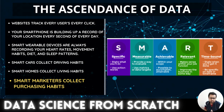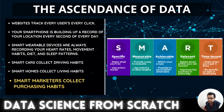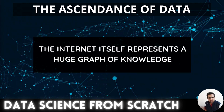Smart marketers collect purchasing habits. Every company or entrepreneur is busy marketing their products and services. Smart marketers gather data on what you like, what you purchase monthly or yearly, and what you are looking to buy. Based on that data they prepare marketing campaigns — specific, measurable, achievable, relevant, and time-bound — to enhance their sales, leading to the further ascendance of data.